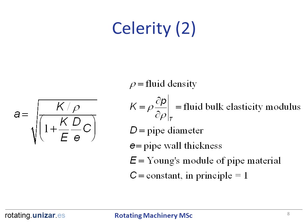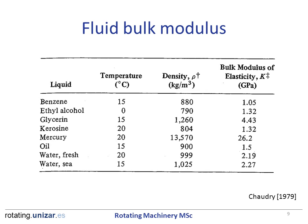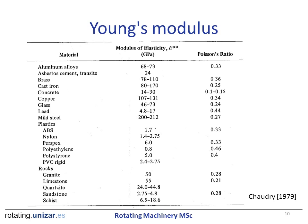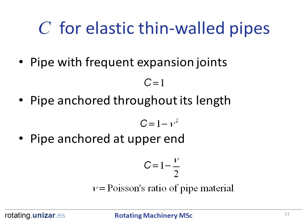Here you can find the mathematical expression to calculate the celerity. This slide presents some properties of common fluids which are relevant to the calculation of the celerity. This table shows the Young's modulus and the Poisson's ratio of common materials used in pipes. This slide shows how to calculate the constant C for thin-walled pipes. Depending on the pipe anchoring condition, we have a distinct constant.